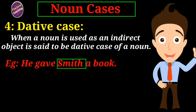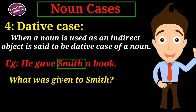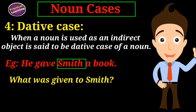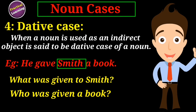To identify direct and indirect objects, ask yourself a question about the sentence: 'What?' For 'He gave Smith a book,' the answer to 'what' is 'a book,' so the direct object is a book. To find the indirect object, ask 'To whom?' — who was given a book? The answer is Smith, so Smith is the indirect object and therefore the dative case of a noun.